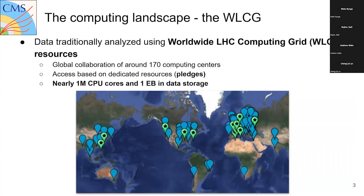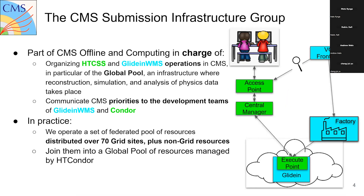In order to process all this data, you need a big computing infrastructure. The experiments at the LHC use the Worldwide LHC Computing Grid (WLCG), which is a global collaboration of around 170 computing centers all around the world where the different experiments access resources using pledges. There are nearly one million CPU cores and one exabyte of data in storage available in this infrastructure.